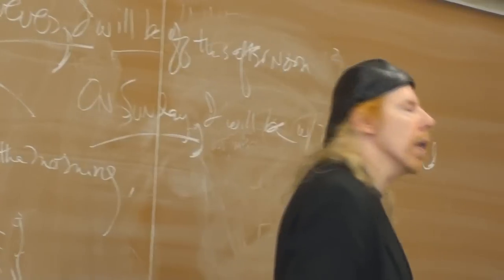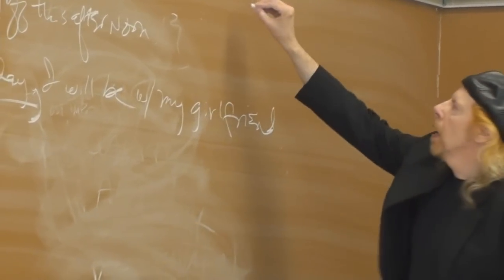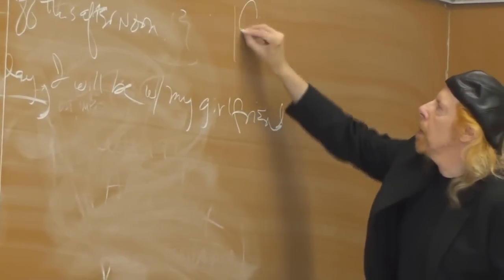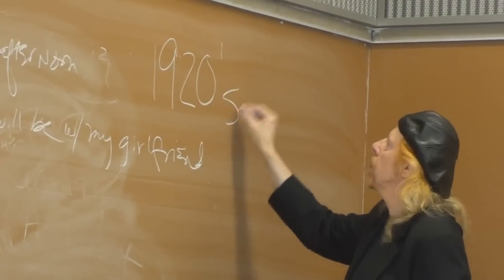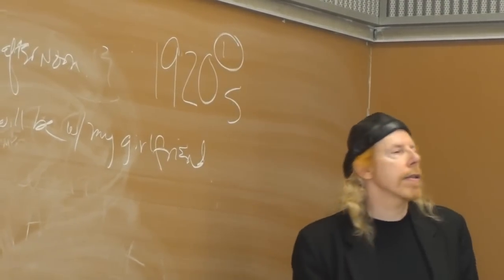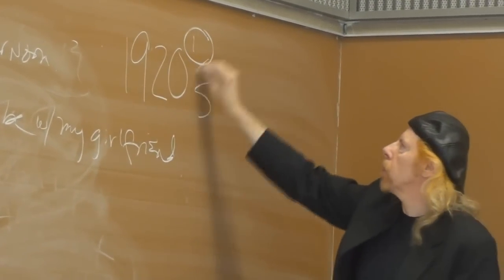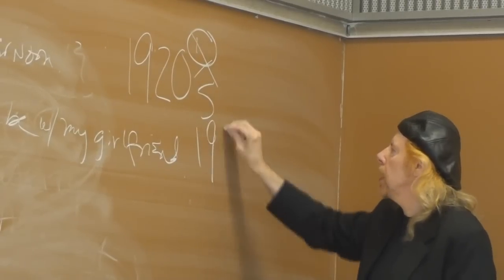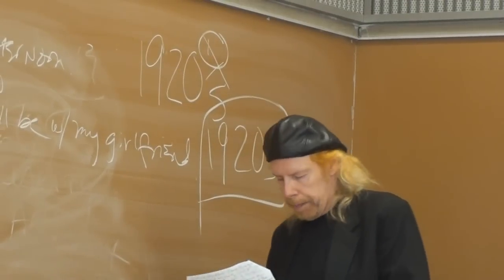If you put dates in, which you probably will in the body of your paper, you write them out like this: '1920s' with an apostrophe — that is not correct. There's no apostrophe; it's just '1920s.' People make this mistake all the time.